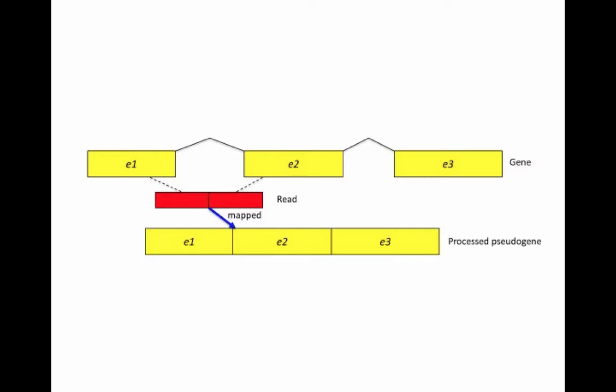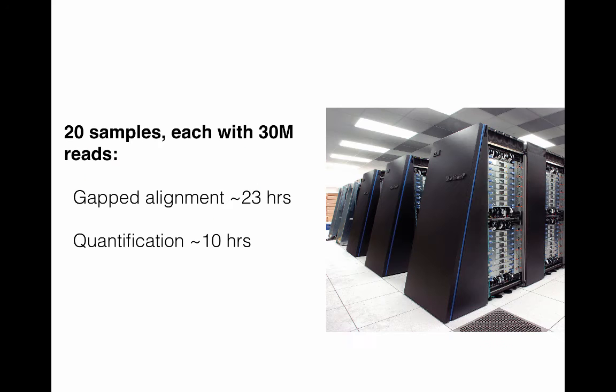An additional problem is the presence of pseudogenes in the human genome. A pseudogene is a collection of the exons with the introns removed. Thus, it looks very much like a mature mRNA, and so reads that originated from RNAs that map over intron-exon boundaries will also map very well to pseudogenes, and aligners need to account for this problem additionally. Thus, with all of this complexity, mapping RNA-seq reads to the genome can be very computationally expensive.